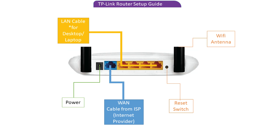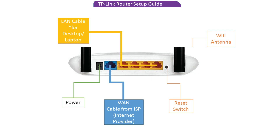So this is the router. You can see the yellow color cable. This is the desktop PC, the laptop and desktop. So this is the connection.